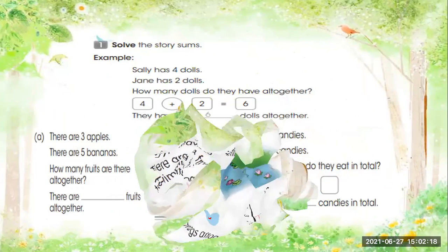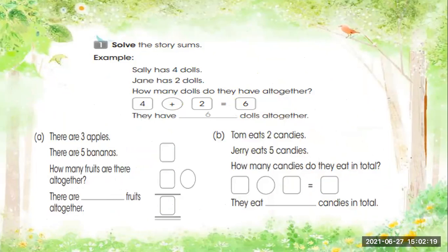Now let us show the story. Example: Sally has four dolls. Jane has two dolls. So how many dolls do they have all together? Four plus two is equals to six. So they have six dolls all together.